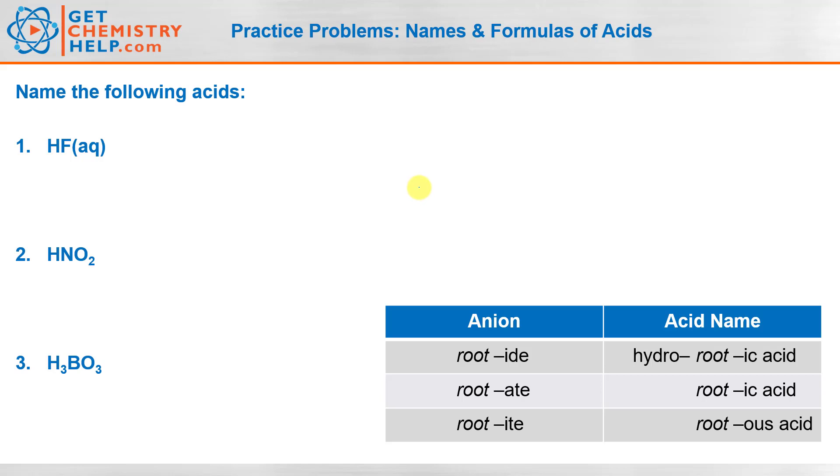Now if you haven't yet watched the accompanying lesson on this, I encourage you to watch that first. You may also want to go to GetChemistryHelp.com and download both the accompanying PDF worksheets, you can print that out and follow along, as well as the summary of nomenclature rules that I put together. And I'll link to all of that in the video description below.